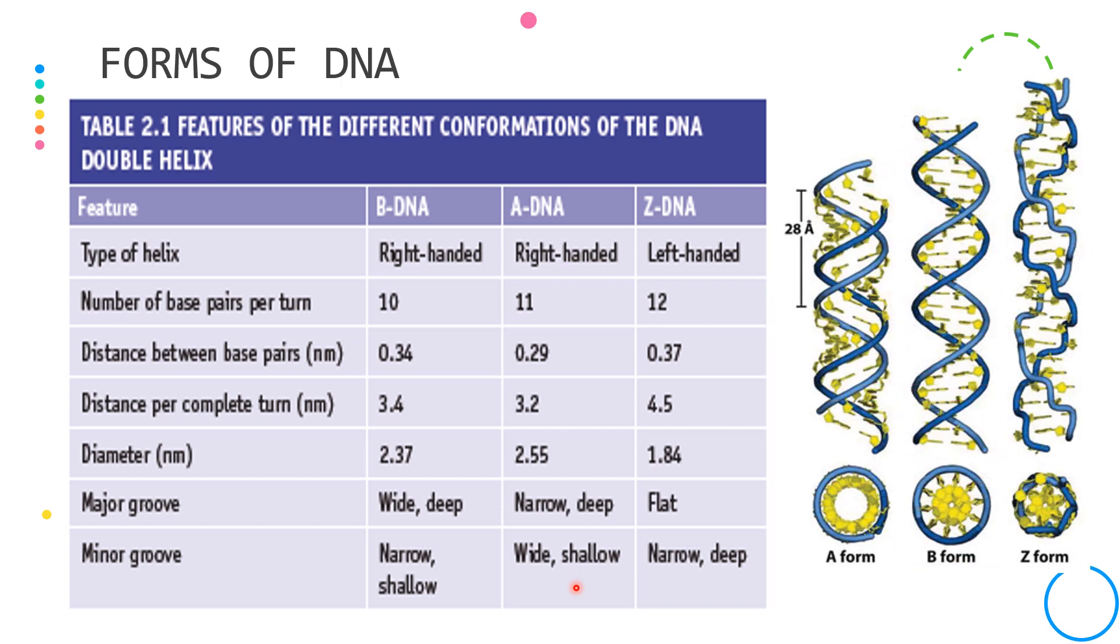A third type of DNA, which is the Z form, is more strikingly different. In this structure, the helix is left-handed and not right-handed.